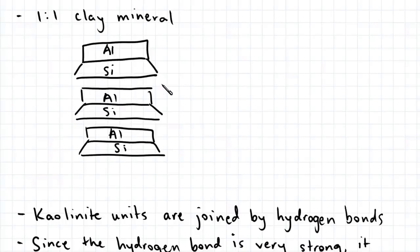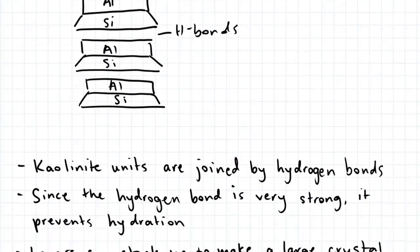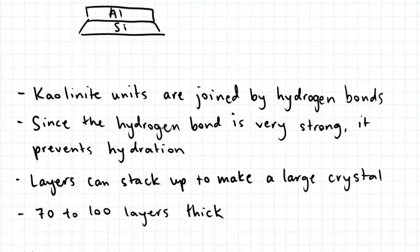The kaolinite units are joined by hydrogen bonds, and since the hydrogen bond is very strong, it prevents hydration. As a result, the layers can stack up to make a large crystal up to 70 to 100 layers thick.